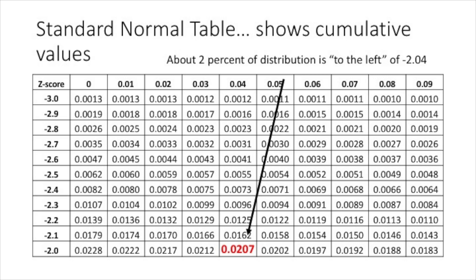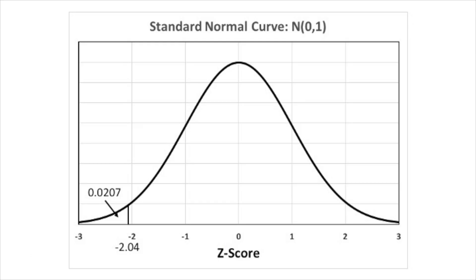For example, with a z-score of minus 2.04: you go down the first column to minus 2.0, then across to 0.04, giving you minus 2.04. The value shown is 0.0207 — meaning about 2% of the distribution is at that z-score or lower. On the standard normal curve, the area below a z-score of minus 2.04 is about 2%, or more precisely 0.0207.